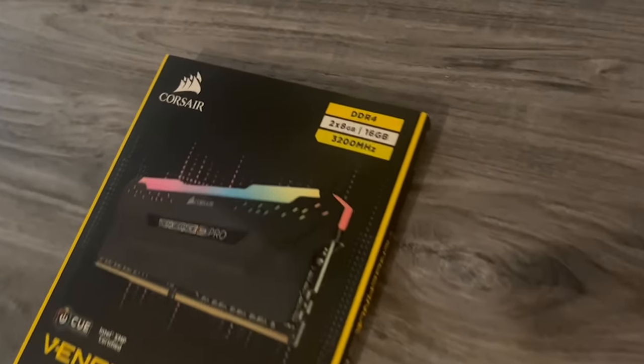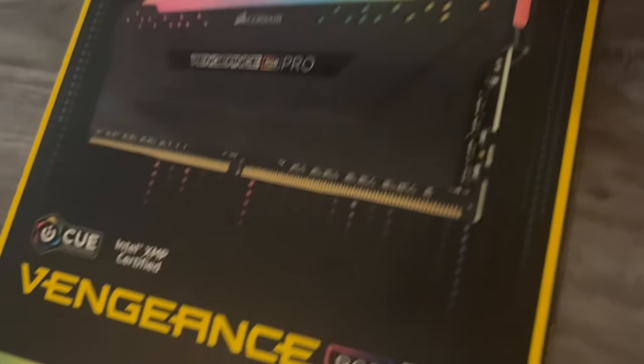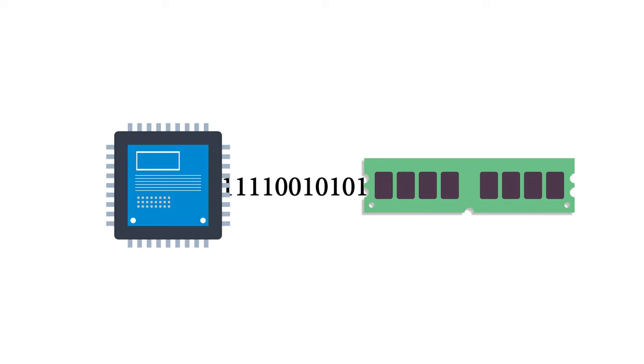Pretty much everyone is now using XMP technology, which stands for Extreme Memory Profile. DOCP and EOCP are basically the same thing. If this is disabled, you'll want to go ahead and enable it, because that gives you the full performance of your memory. The manufacturer has already tested and confirmed these memory sticks are stable at higher clock speeds. So if your RAM advertises 3800 MHz, you might not actually be getting that unless you enable this setting in your BIOS, which imports the profile data from your RAM stick.